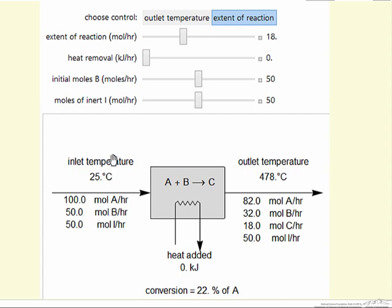We can change the ratio of A to B by the inlet number of moles of B. We can also add inert to the system, and that will affect the final temperature and therefore affect what conversion we end up with.